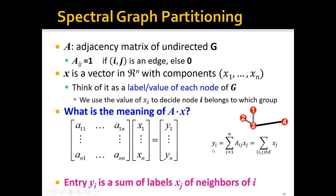is actually equal to the sum of n terms, where each term is the product of Aij times xj. So basically, this is saying that yi is the sum of the labels xj of the neighbors of i.